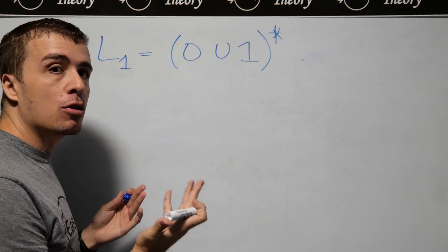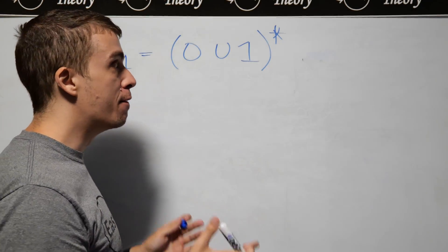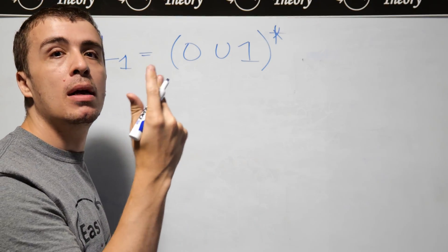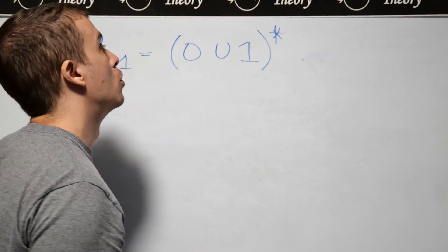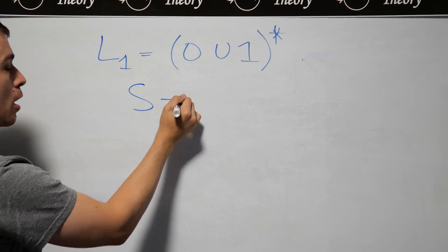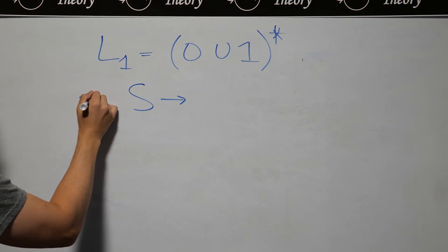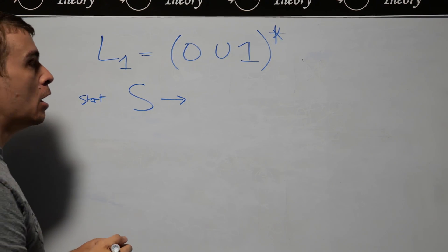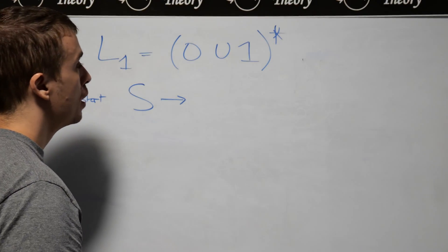Every single context-free grammar must have a start variable, a set of variables, a set of terminals, and a set of rules. So we need a start variable — I'm going to call it S here — and we need a rule to actually generate the strings.